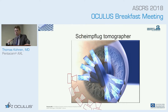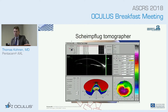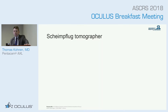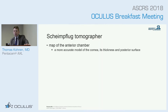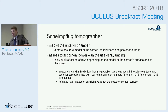In the next talks you will see a bit about this Scheimflug tomography outcome — as shown here in this picture, which shows, for example, a keratoconus in the right lower part. We now have a map of the anterior chamber, a more accurate model of the cornea, its thickness, and the posterior surface. This is very important for assessing total corneal power using ray tracing when you measure the anterior segment.